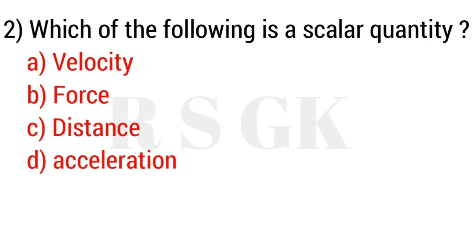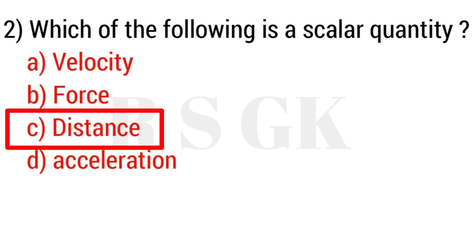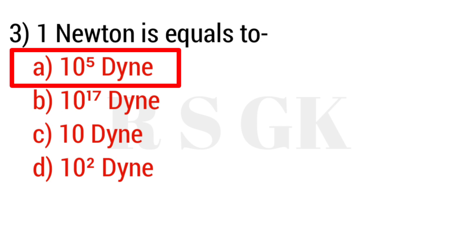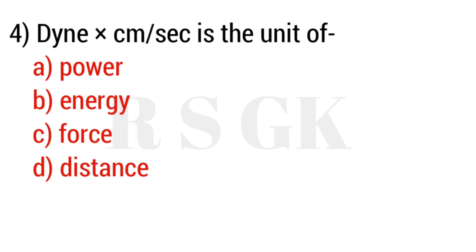The answer is Option C: distance. Question number three: One newton is equal to — the answer is Option A: 10 to the power 5 dynes. Question number four: 9 into centimeter per second is the unit of —